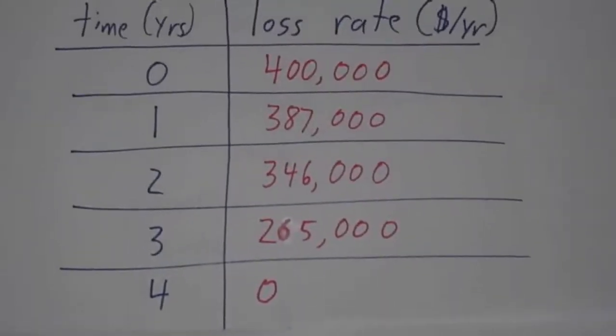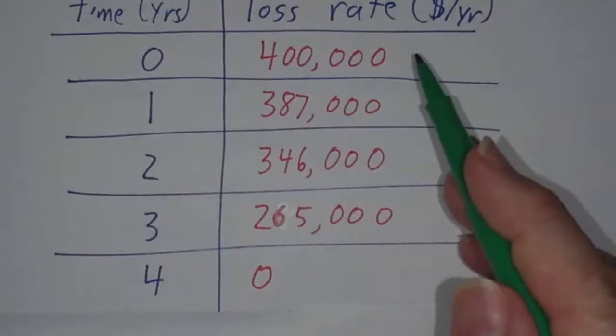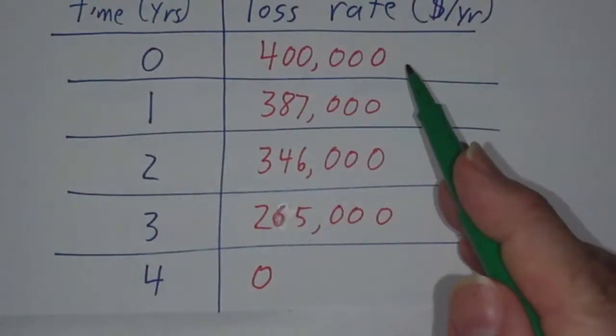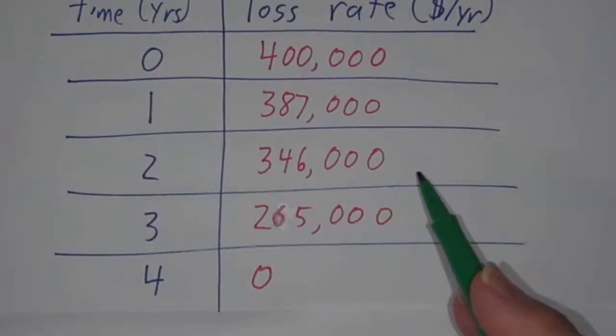We can make a table of how fast it's losing money at the beginning. At the beginning of the first year, it's losing money at $400,000 a year. At the beginning of the second year, it's only losing at $387,000 per year. Third year, $346,000. Beginning of the fourth year, $265,000. And at the end of the fourth year, it's not losing any money at all.